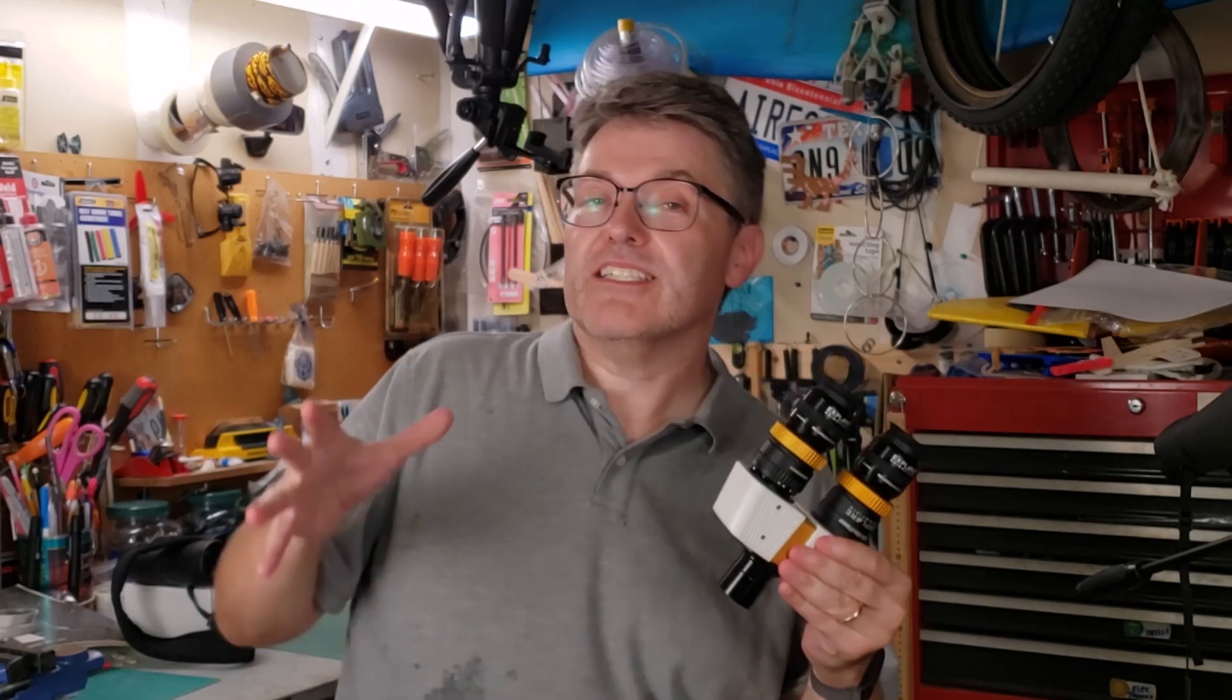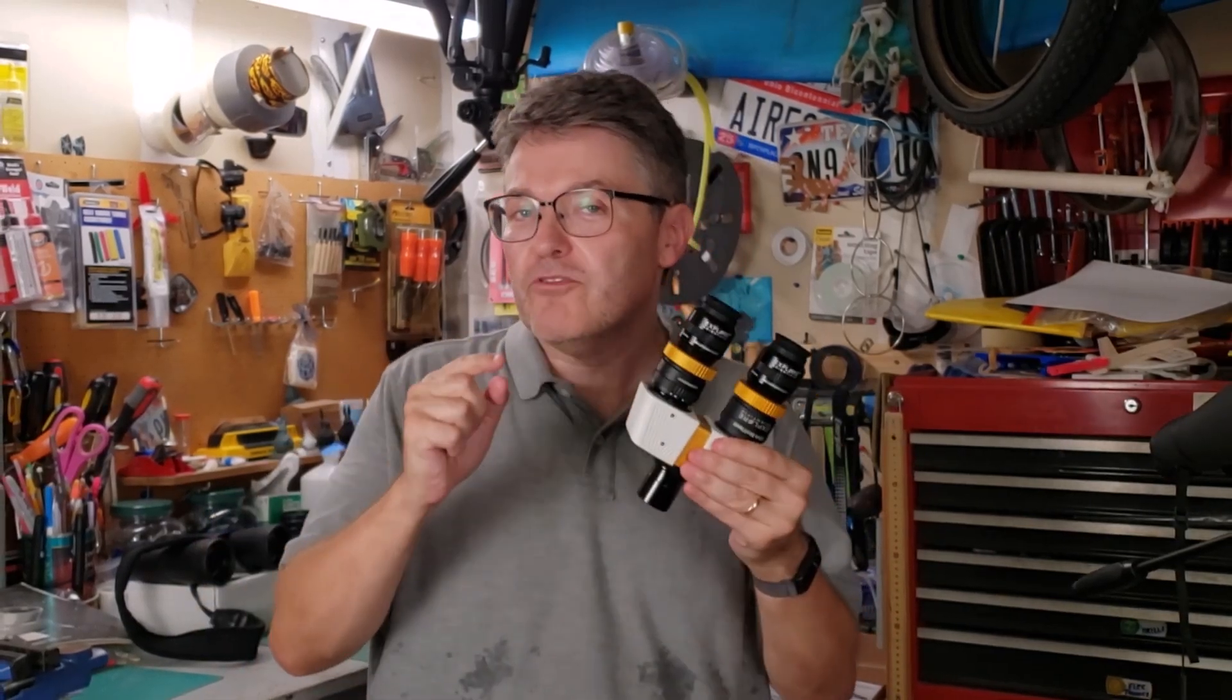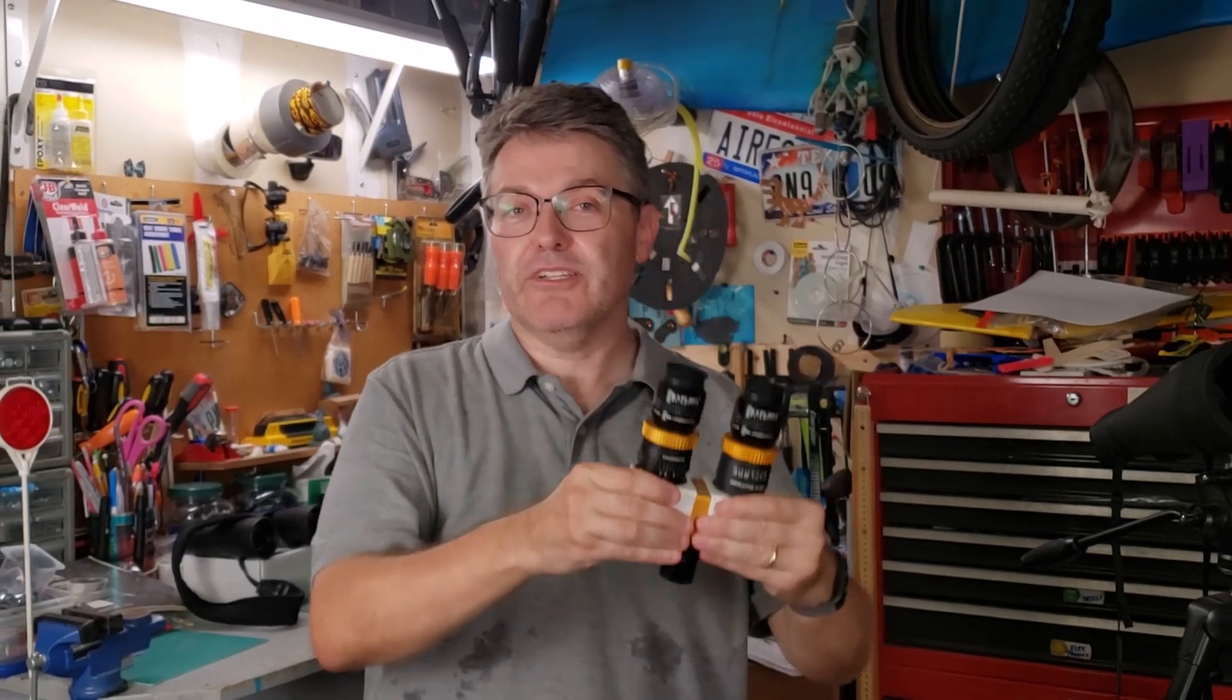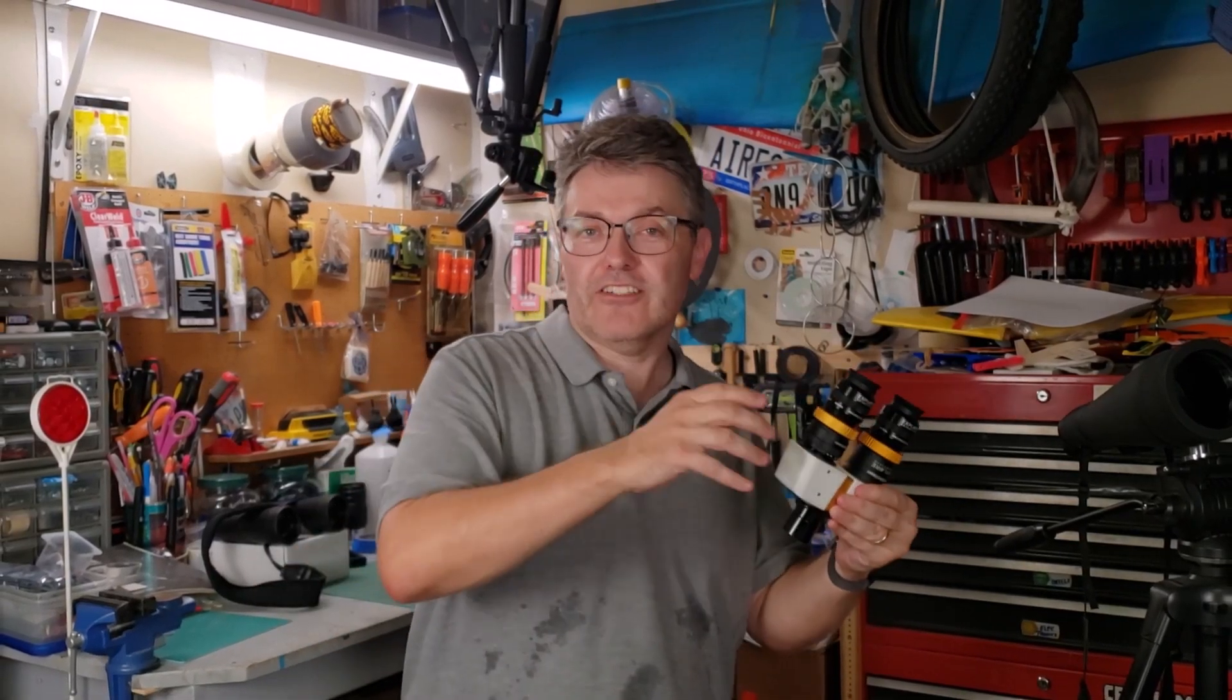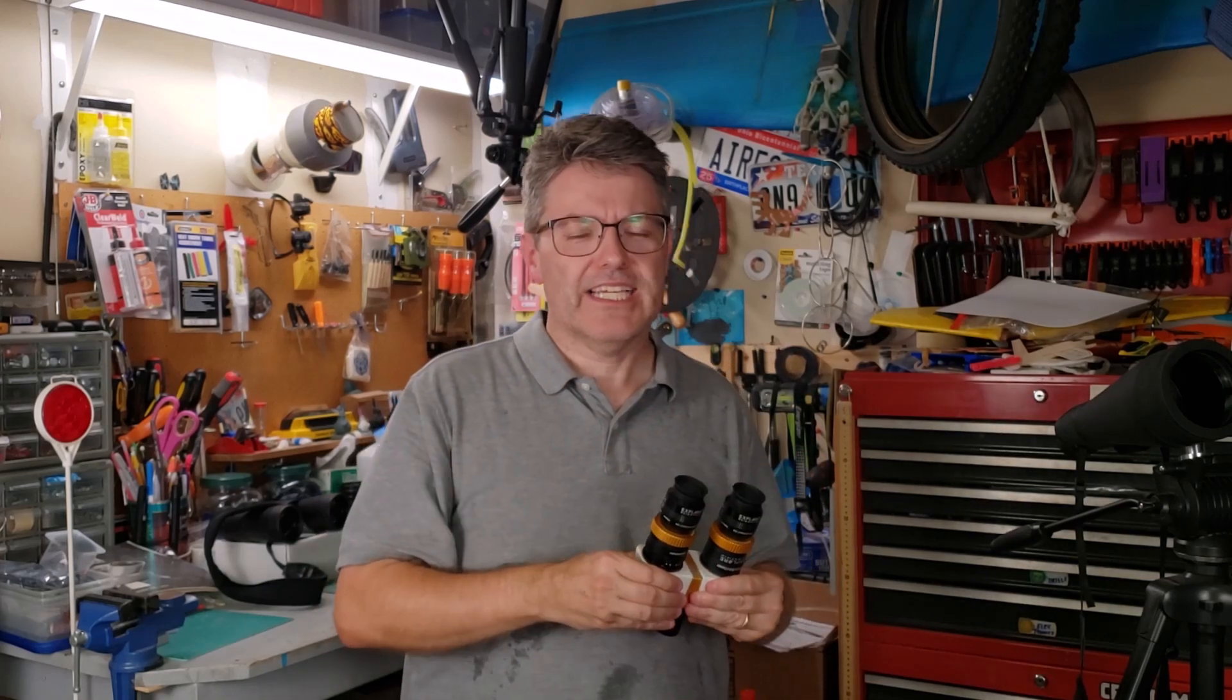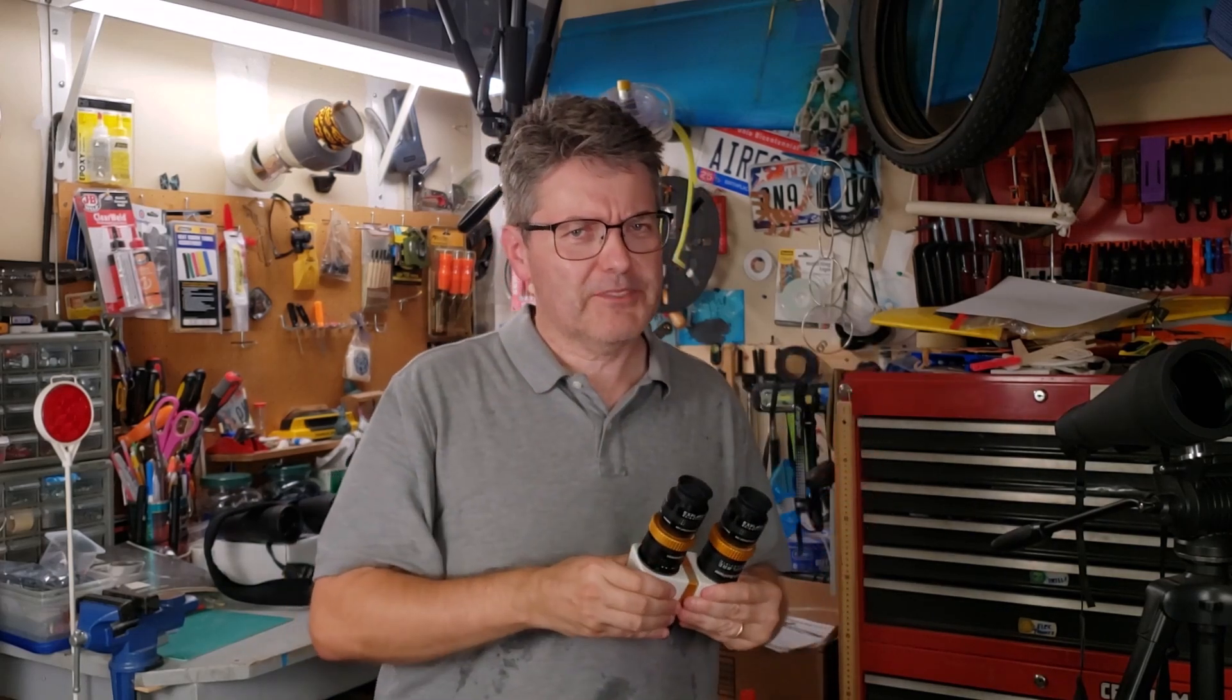The main lesson in this video is that some bino viewers will work in some telescopes, but not all. The only exception to that rule are parfocal bino viewers like this set from Explore Scientific. Generally speaking, it tends to be a little bit easier for bino viewers to work in refractor-style telescopes as opposed to reflector-style telescopes. It's kind of interesting why that is. Let me show you.